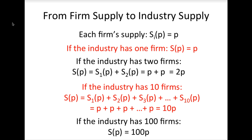Adding together the supply curves of different firms to determine the industry supply works the same way even if firms in the market have different supply functions.